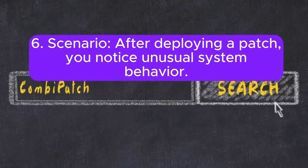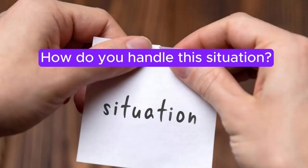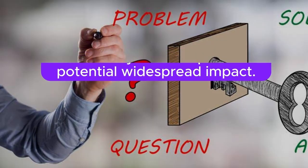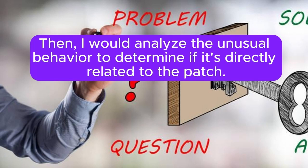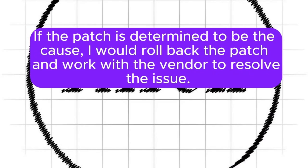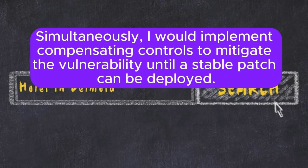Scenario 6: After deploying a patch, you notice unusual system behavior. How do you handle this situation? I would isolate the affected systems to prevent potential widespread impact, then analyze the unusual behavior to determine if it's directly related to the patch. This involves reviewing system logs, conducting regression testing, and consulting vendor documentation. If the patch is determined to be the cause, I would roll back the patch and work with the vendor to resolve the issue. Simultaneously, I would implement compensating controls to mitigate the vulnerability until a stable patch can be deployed.